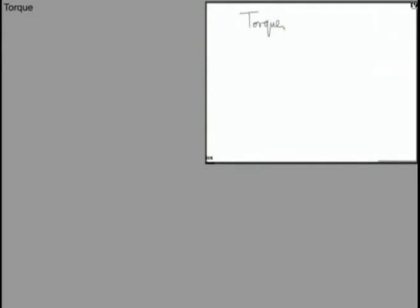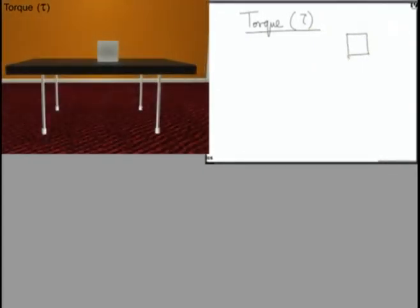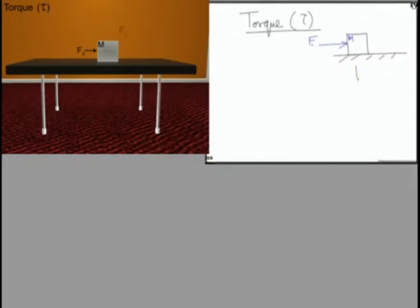Torque is denoted by tau. Whenever a force acts on a block, it will produce translational motion. If this is a frictionless table and there is a block kept on it, and I apply some force passing through the center of mass, the block will start moving with some acceleration. Since F0 is the only force and mass of the system is constant, F0 equals Ma, giving acceleration equal to F0 upon M.